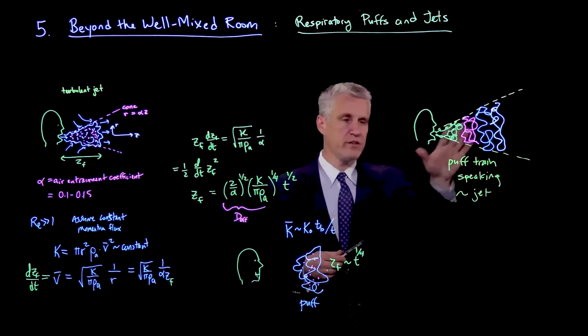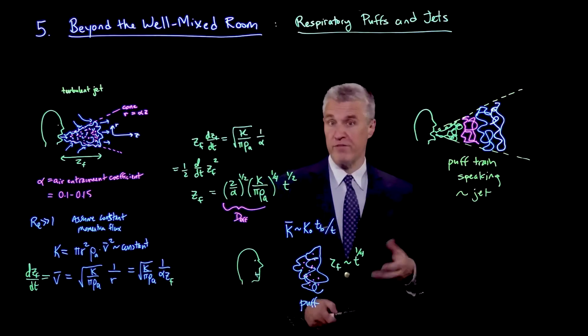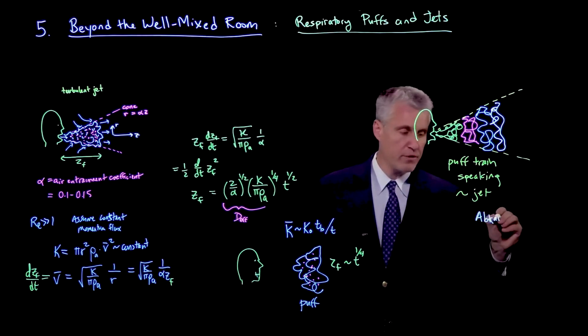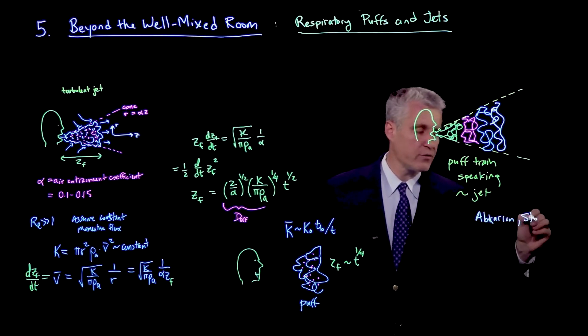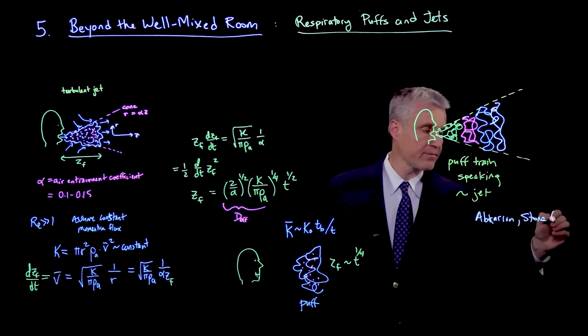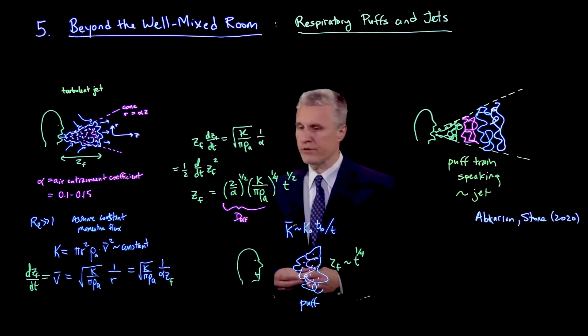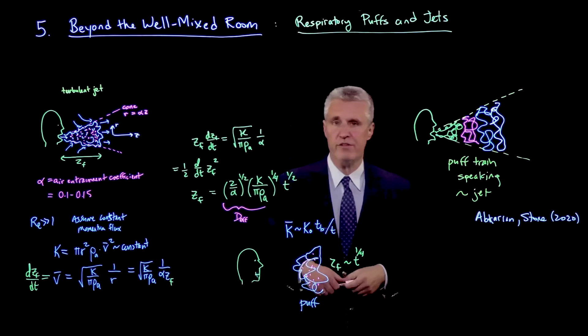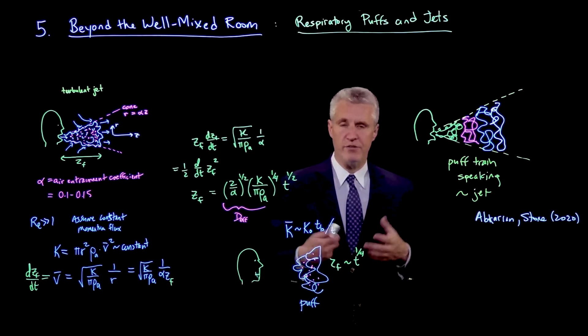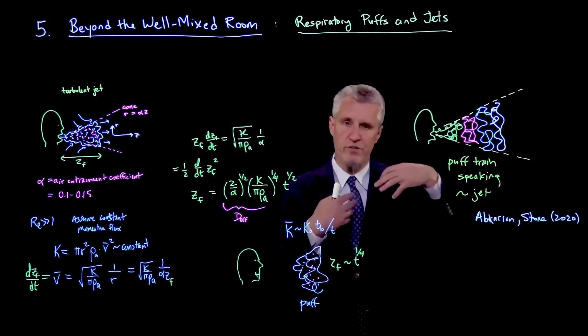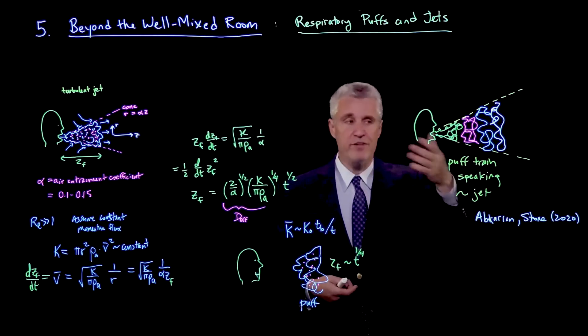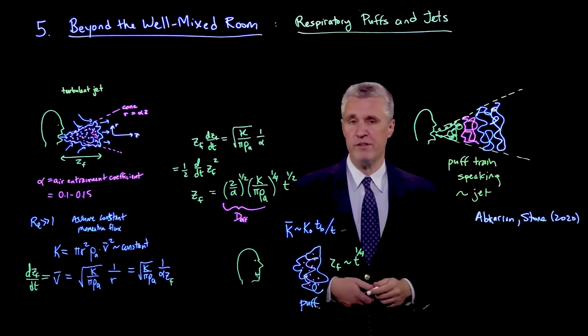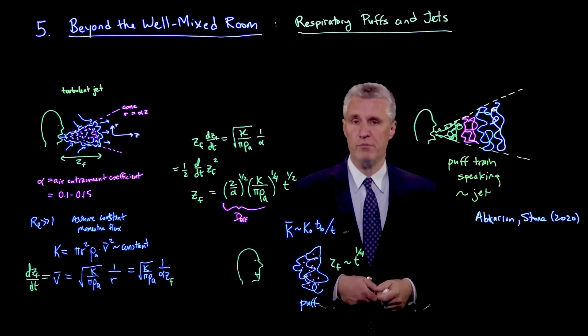So I should mention that this way of thinking here was recently introduced and verified experimentally in a paper by Abakarian and Howard Stone and collaborators, and also introduced this notion of the scaling and showed that actually the puff train has a scaling which is very similar to the initial jet with the square root of time. And so that's an important concept we'll come to now, because we want to ask now what if somebody is speaking or even just breathing continuously in a certain direction and generating aerosol particles, how does their concentration evolve in this sort of a respiratory plume or jet?